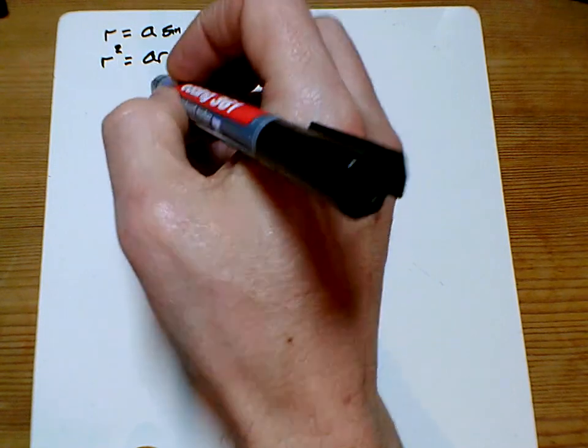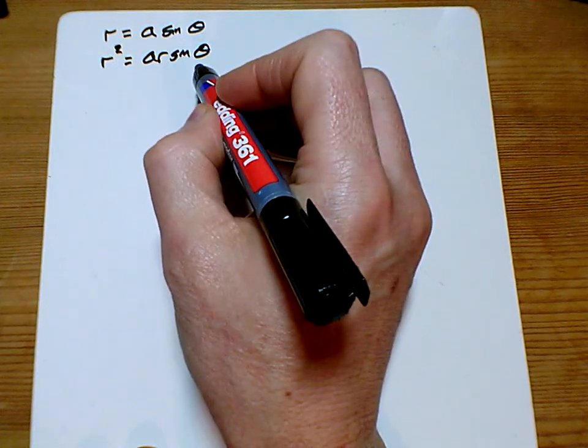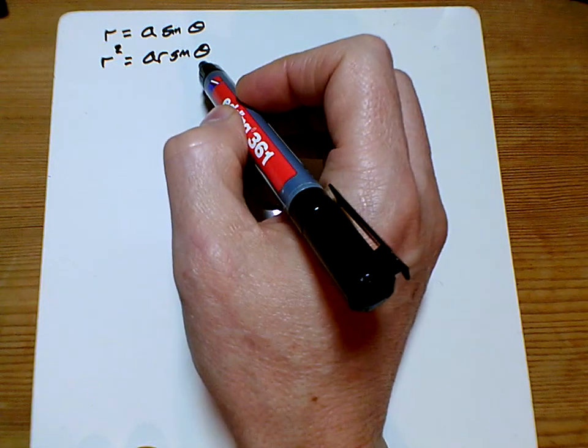And so that gives us that R squared equals sine squared, sorry, R squared equals A R sine theta.